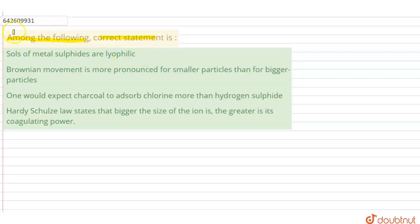Here goes the first statement: the sols of the metal sulfides are lyophilic. Can we have any examples? Yes, of course we can have examples like arsenic sulfide (As₂S₃), this is one of the best examples which we have in our reference books.